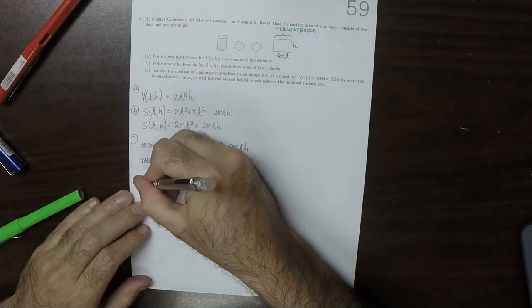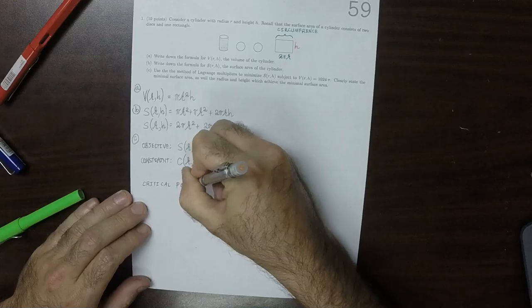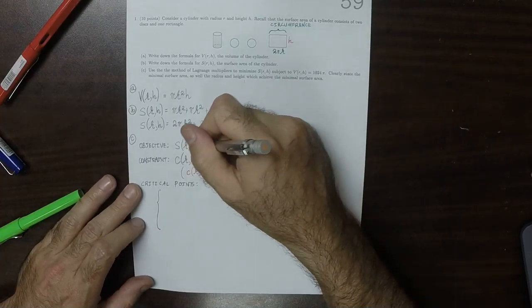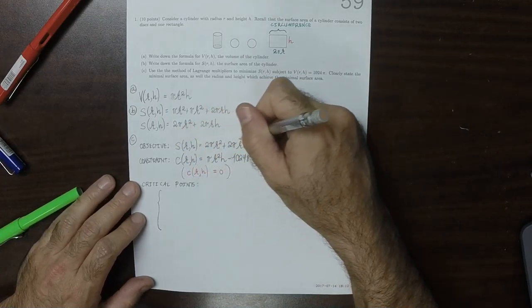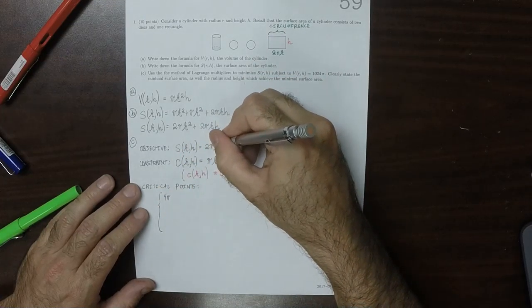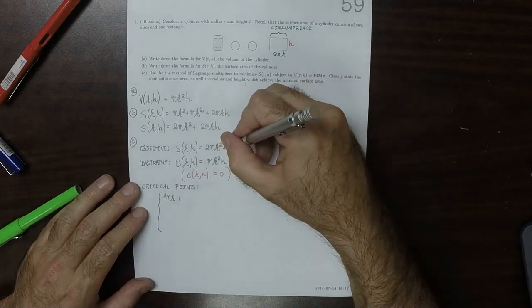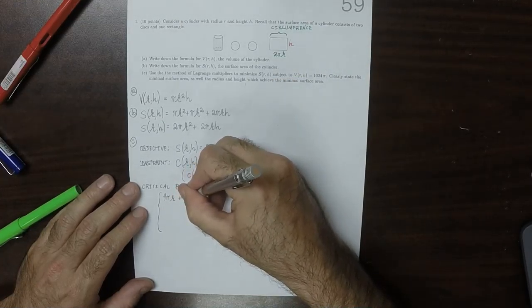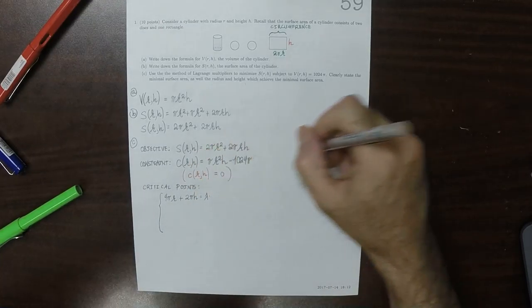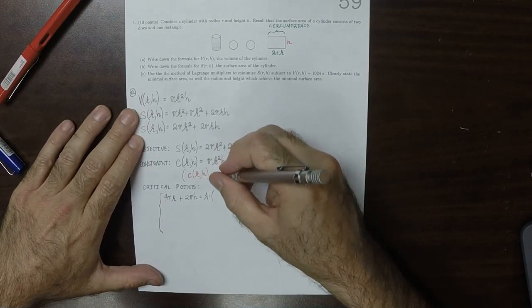Okay, so then the critical points are going to be the solution to this system. So the r partial of the objective, so that would be 4 pi r plus 2 pi h is lambda multiplied by the r partial of the constraint, so that would be 2 pi r h.